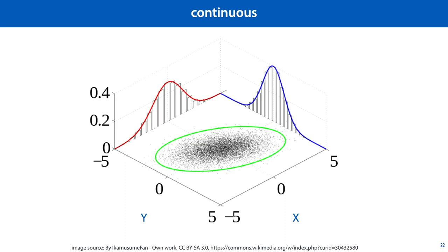Here's what these concepts look like with continuous random variables — a bivariate normal distribution in this case. The joint probability distribution you can think of not as a table, but as a coloring of the plane. Marginalizing out either variable results in a univariate normal distribution. The conditional distribution corresponds to a vertical or horizontal slice through the joint distribution, and also results in a univariate normal distribution.